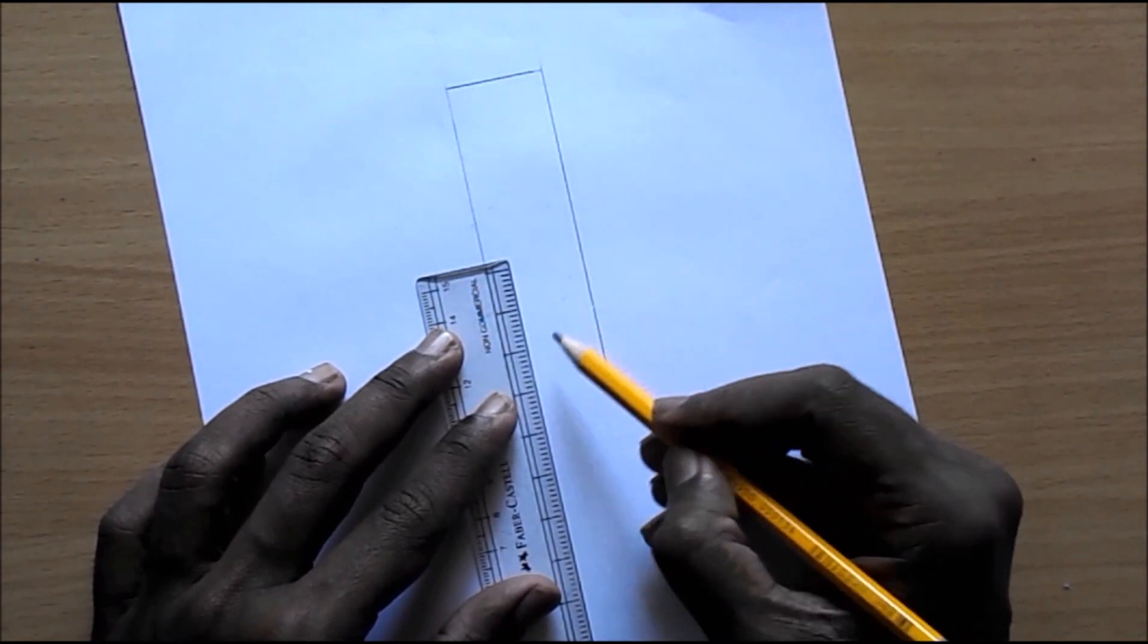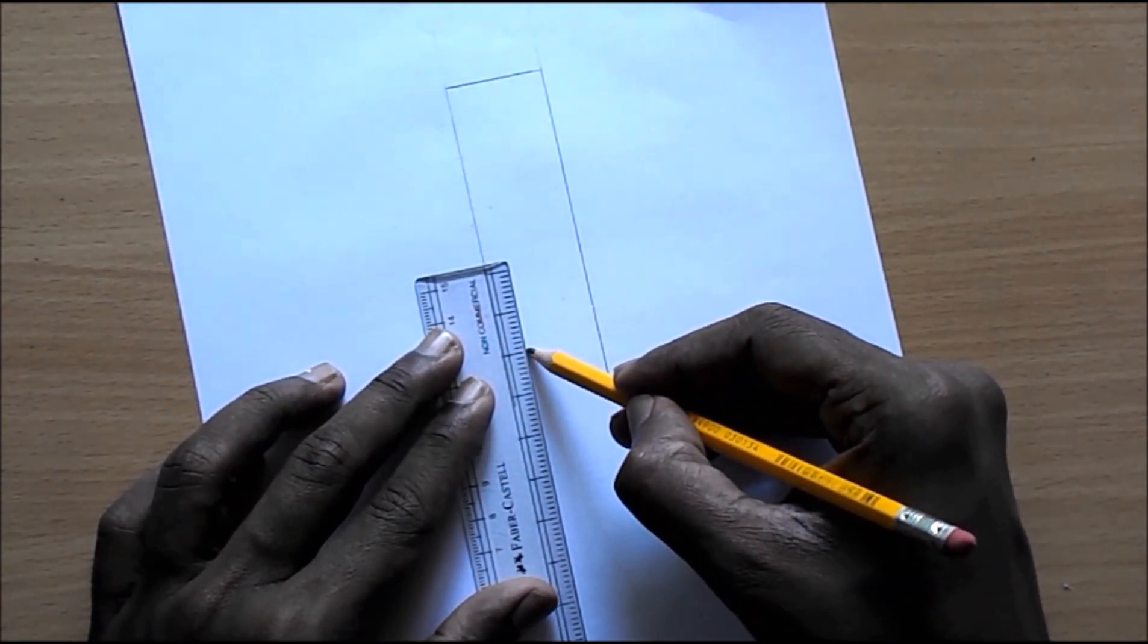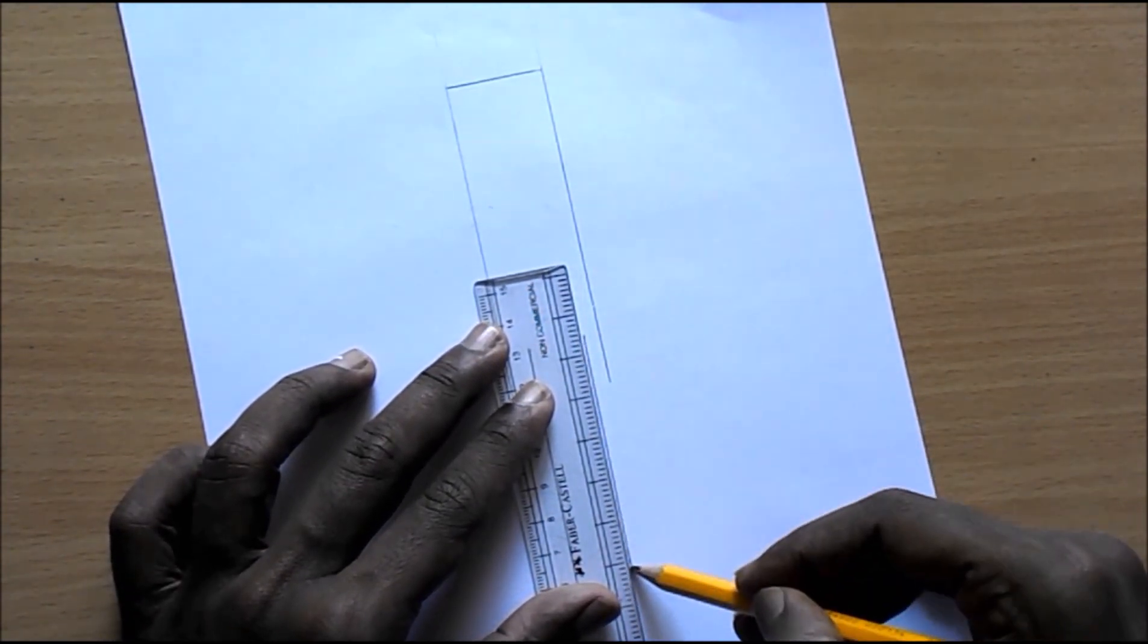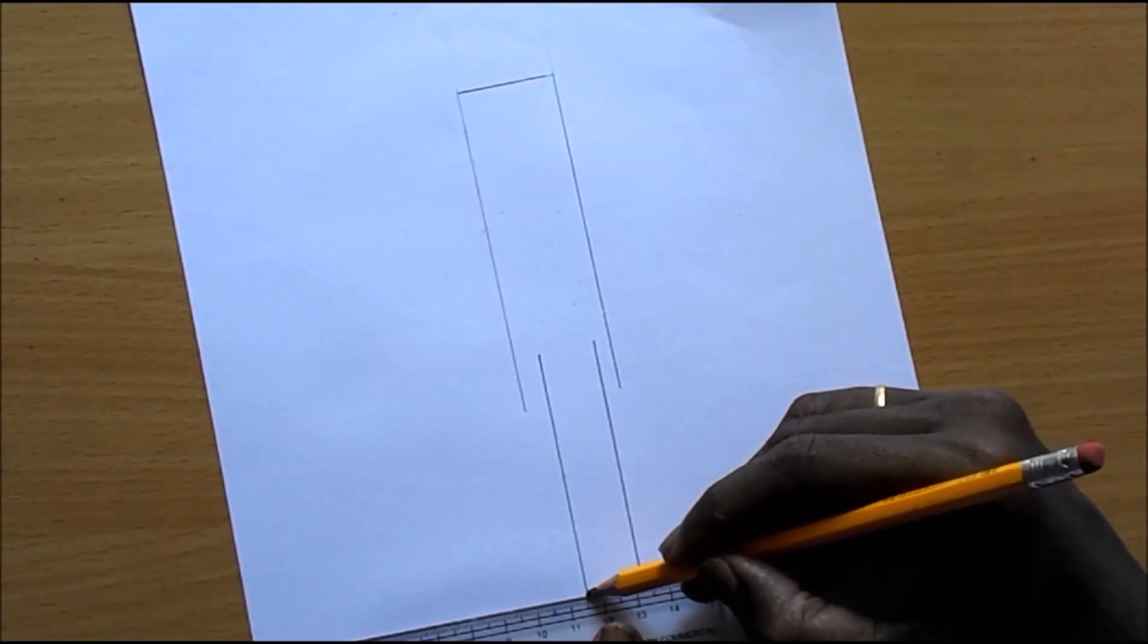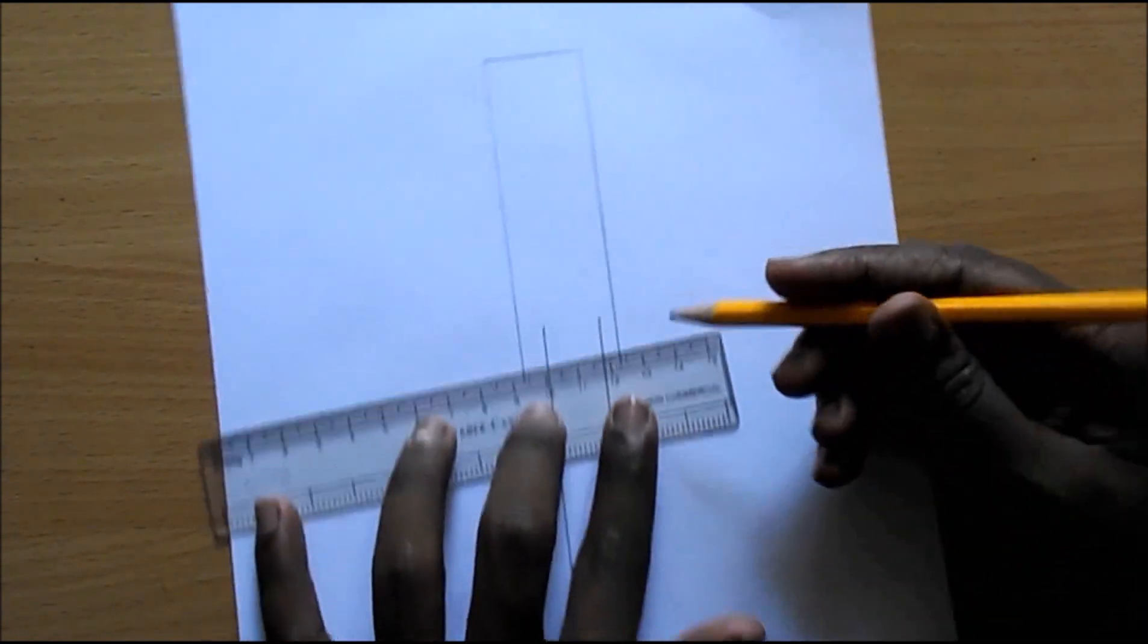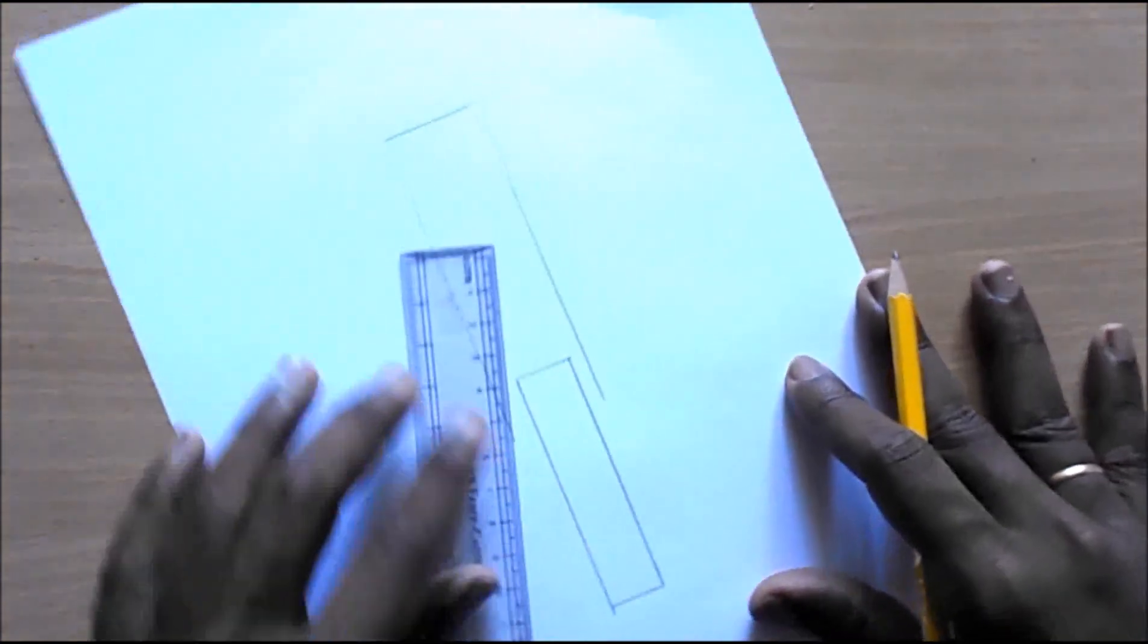And then draw another line in the center and also another one, and join them as I was doing out here. This forms the propeller for the rocket.